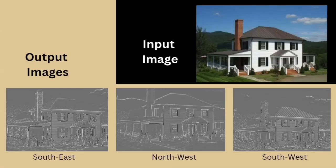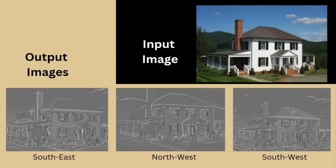In this slide we can see how the embossing effect looks. The first image is our input image and the others are output images. The first output image is embossed in the southeast direction, the second in the northwest direction, and the last in the southwest direction. You can clearly differentiate these three output images — they all show different directional embossing effects.